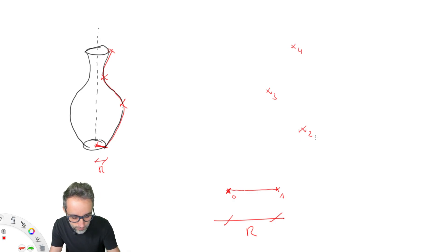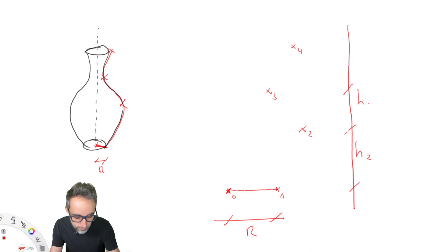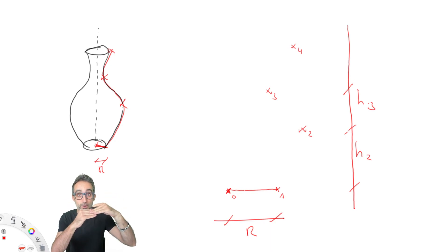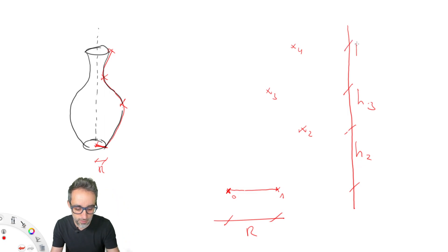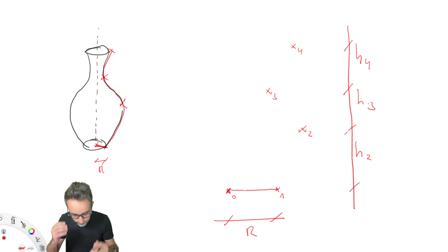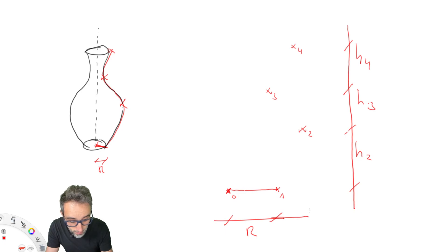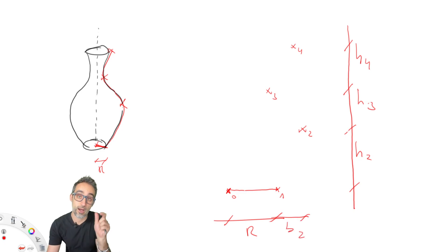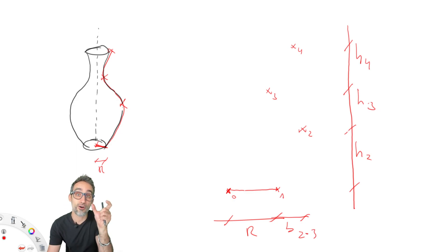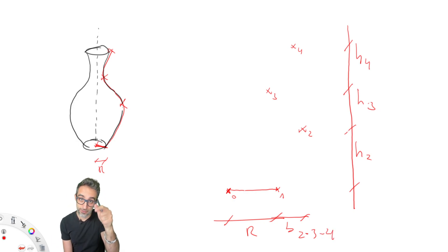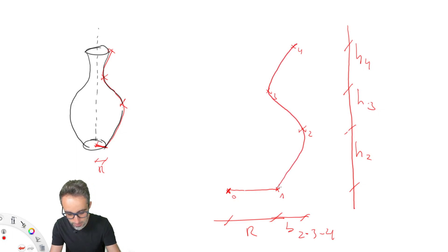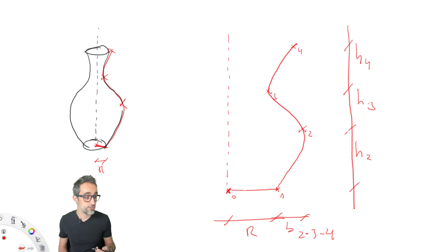So I'm going to define three heights: the height of point number two, the height of point number three — which is not the total height but how far away from point two that point is — and height number four. For each one of them I'm also going to define b2, b3, and b4, which are how far off each point is from the previous one. Then I'll create an interpolated curve and revolve that over an axis to generate the form.